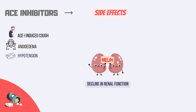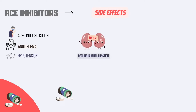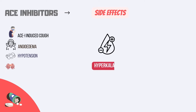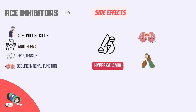A reversible decline in renal function has been linked to ACE inhibitors. Those with heart failure who rely on the renin-angiotensin-aldosterone pathway may experience alterations in renal function. Lastly, hyperkalemia could be brought on by ACE inhibitors. People who have a history of renal impairment, diabetes, concurrent use of potassium-sparing diuretics, or taking potassium supplements are at risk for this side effect.